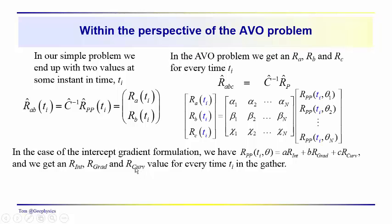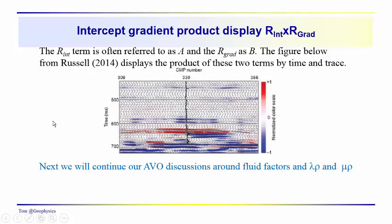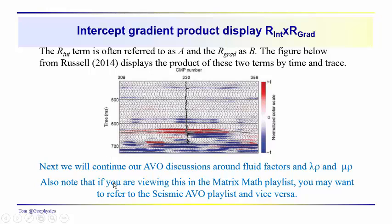We've shown how we can come up with the intercept, gradient, and curvature terms and get a seismic display — in this case the product of the intercept and the gradient. Next, we're going to continue our AVO discussions around fluid factors, lambda-rho, mu-rho. We'll talk about some interpretation. If you are viewing this in the matrix math playlist, you may want to refer to the seismic AVO playlist and vice versa, depending on which thread you're working through.